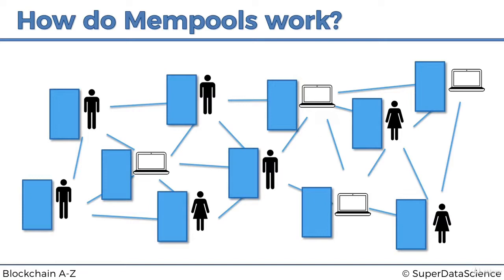As we've seen before, there is a mempool attached to each one of these participants. The crucial thing here is that there is a mempool for each participant, whether it's a node or a miner. That means there isn't just one mempool shared between everybody, because this is a peer-to-peer network - that's the whole concept of blockchain. There's nothing central about it, including the mempool; it has to be individual to every single participant.